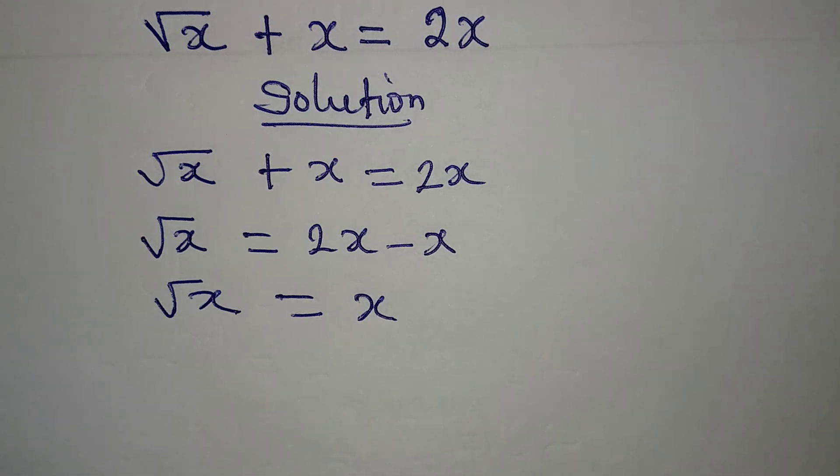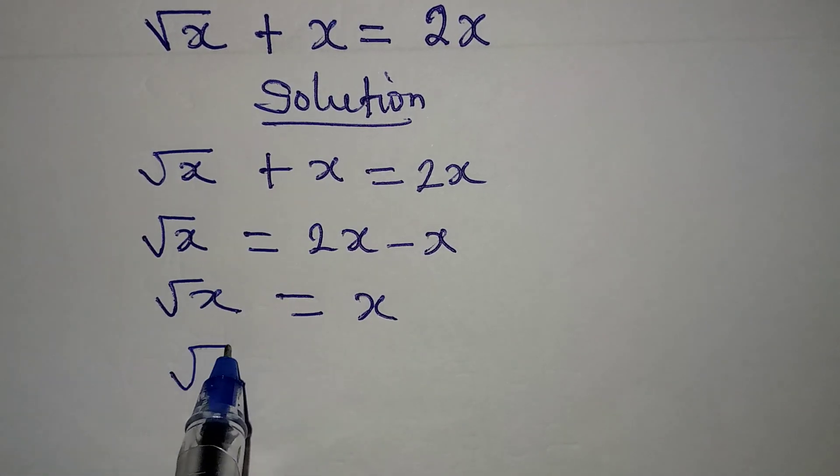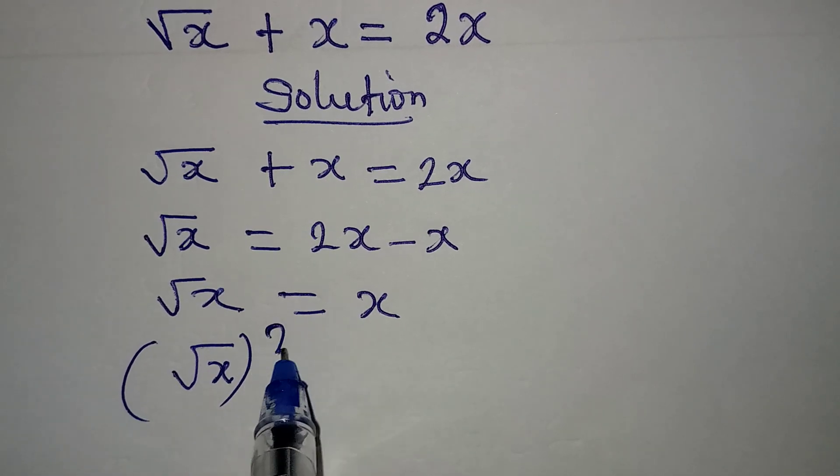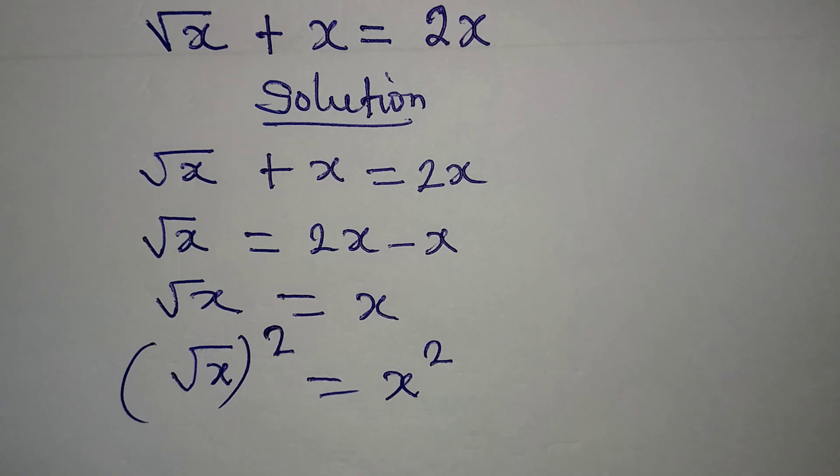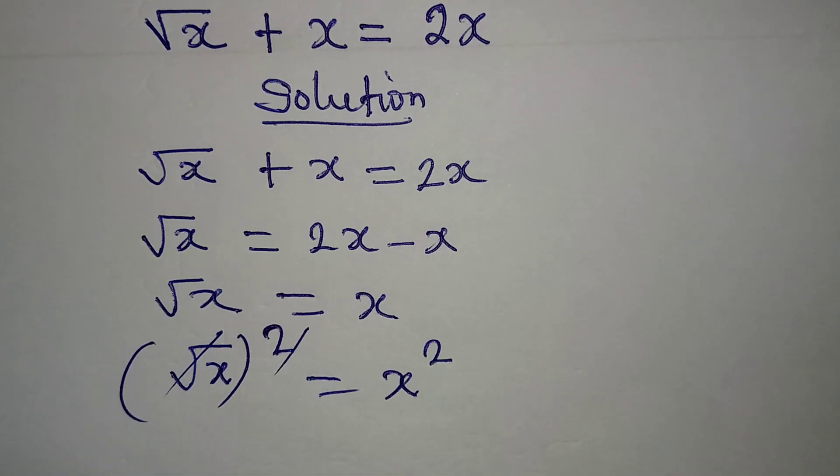How do you deal with this? You're going to square both sides to remove the square root, and then you have x squared. Now this and this will cancel.